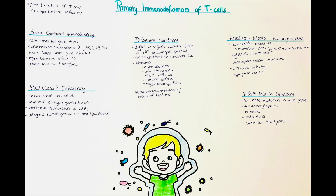The MHC class 2 molecule is usually only located on antigen presenting cells. The consequence is an impairment of antigen presentation by those cells, as well as defective maturation of CD4 lymphocyte populations — also called T helper cells. The affected children easily get infected by bacteria, viruses, fungi, and other opportunistic infections, and if not treated, they often die of infections, especially viral infections.